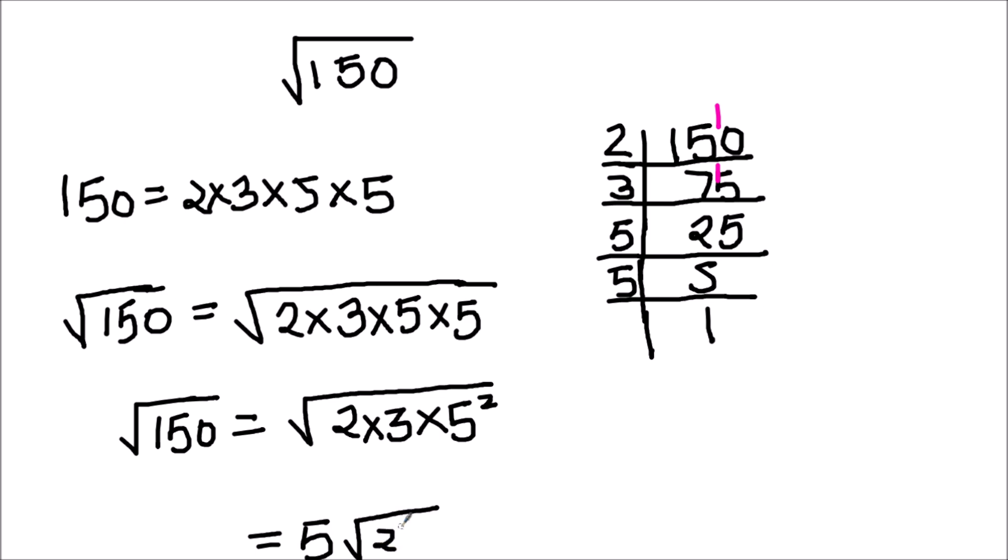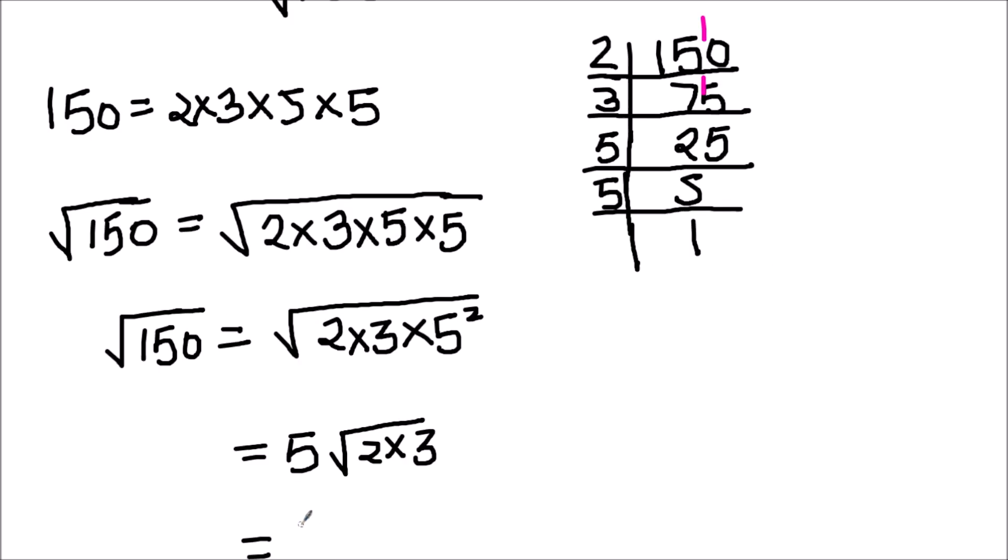So this is 5 times square root of 2 times 3 which equals 5 root 6. Square root of 150 is 5 times square root of 6. This is how we find the square root of non-perfect square numbers.